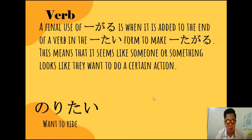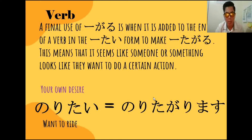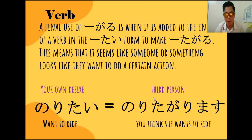Noritai means want to ride. Ginagamit natin si noritai sa sarili — your own desire. Then pag nag-add na tayo ng garimasu, so magiging norita garimasu — from noritai, inumit lang natin si i, dinagdag natin ng garimasu. Ginagamit naman natin ito para sa third person. Ibig sabihin, hindi ikaw mismo yung parang gusto mong sumakay — yung ibang tao. You think she wants to ride. Parang gusto niyang sumakay, based lang din sa impression na pinapakita niya.